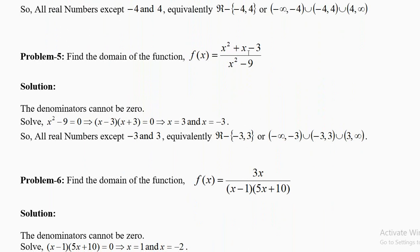Find the domain of f(x) = (x² + x − 3)/(x² − 9). There is no square root; 1 by 0 is not allowed. Solve x² − 9 = 0: factor as (x − 3)(x + 3) = 0, giving x = 3 and x = −3. The domain is all real numbers except −3 and 3. In interval form: (−∞, −3) ∪ (−3, 3) ∪ (3, +∞).